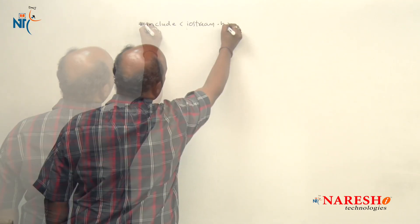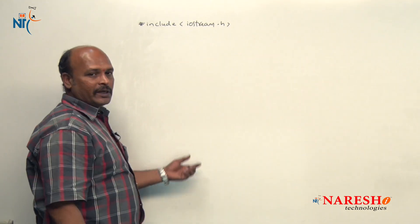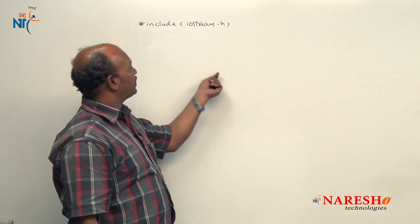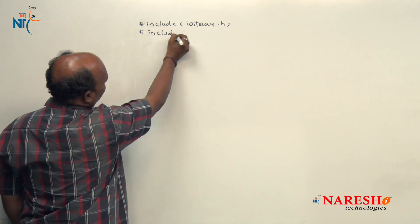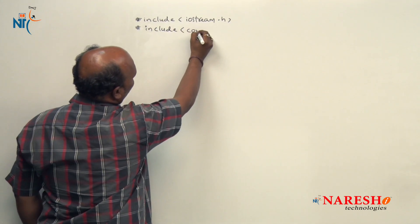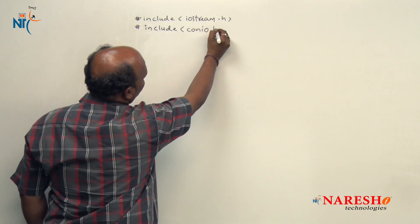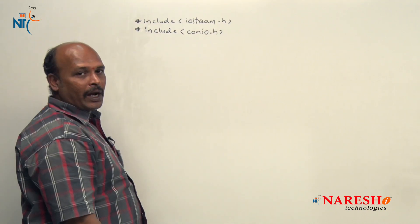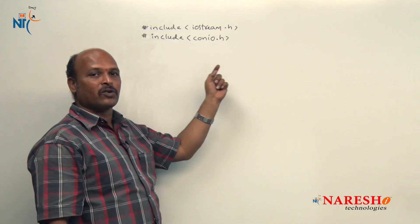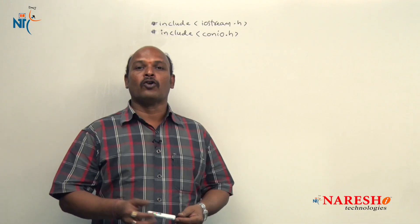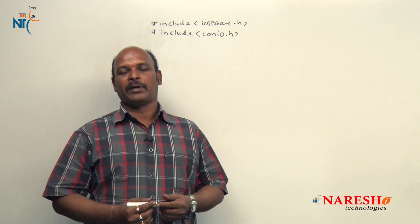First, let's include the common header files. We include `iostream.h` and `conio.h`. Now we have two header files — `iostream.h` and `conio.h` — and we are ready to show how to overload a template function.